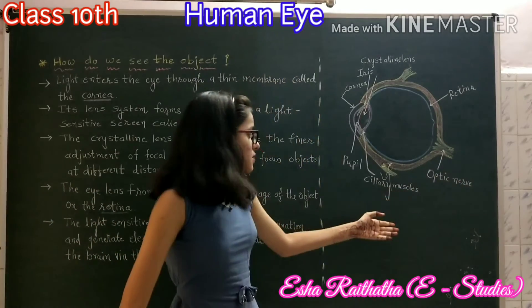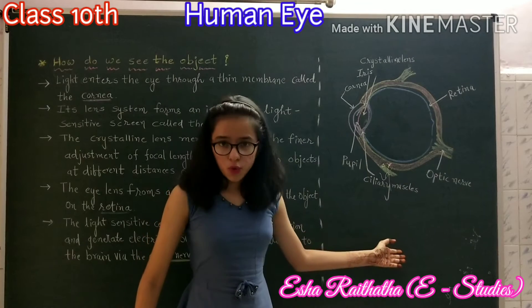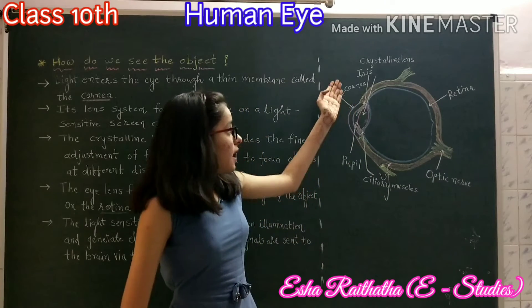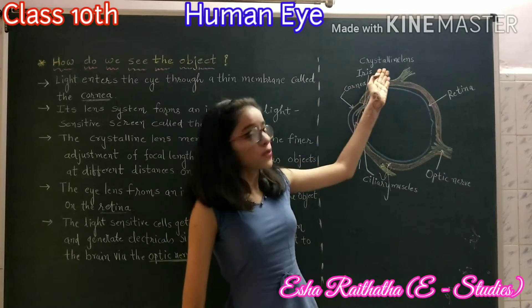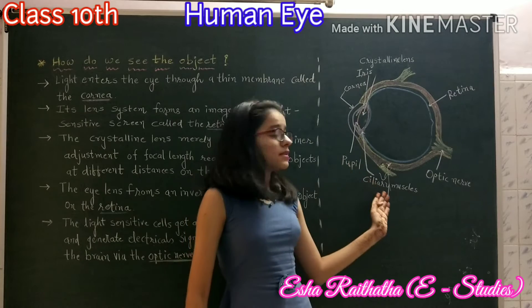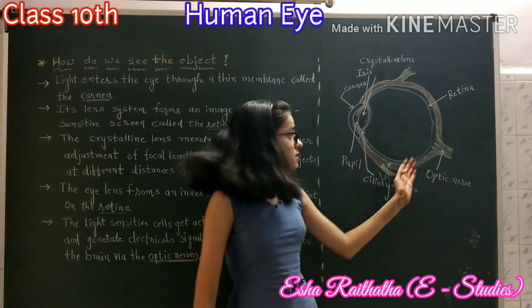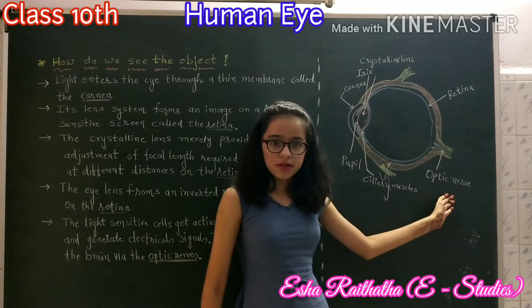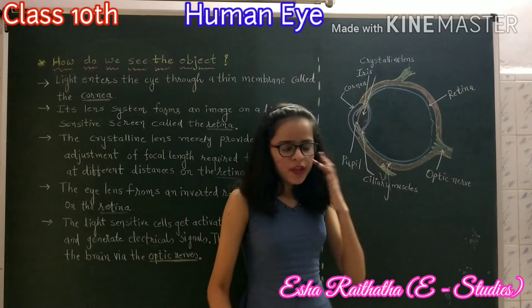Here you can see the structure of the human eye: cornea, iris, crystalline lens, pupil, ciliary muscles, retina, and optic nerve.